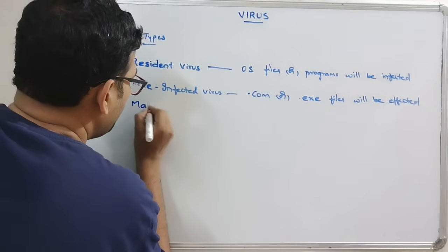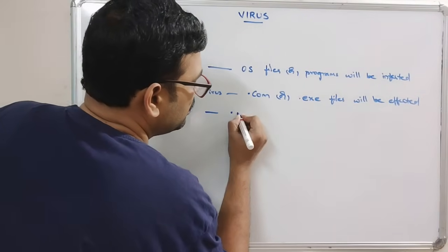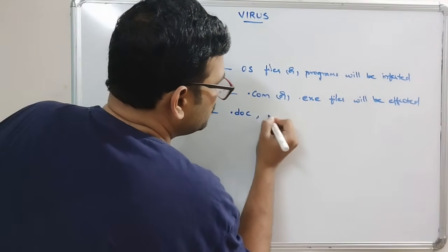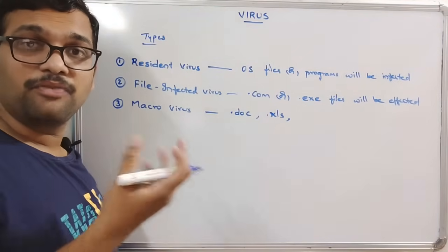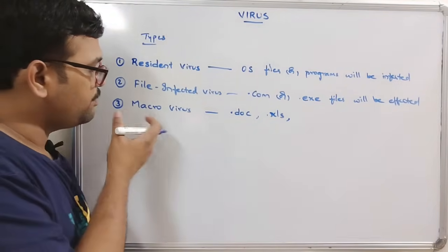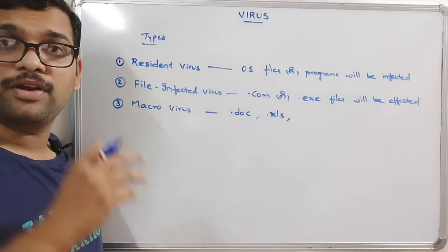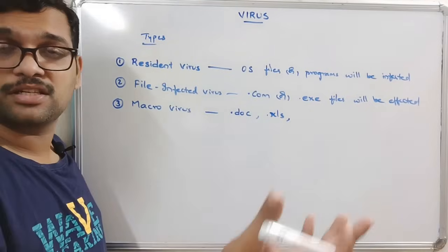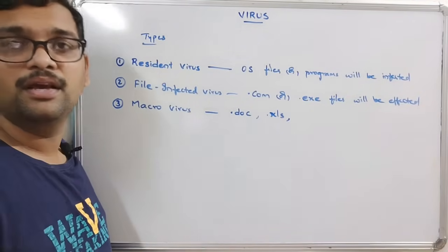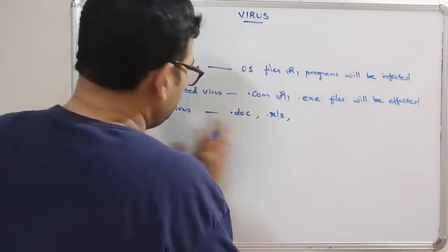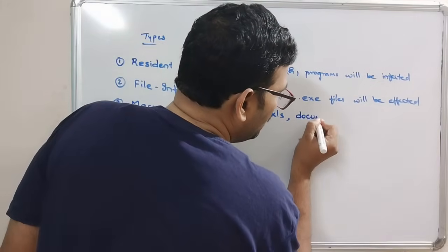Next is the macro virus. A macro virus affects .doc files or .xls files — that means office application documents. Some part of code becomes embedded in the documents, so whenever you share the document from one system to another, the virus will also be transferred automatically. This virus affects documents.